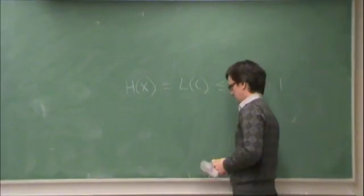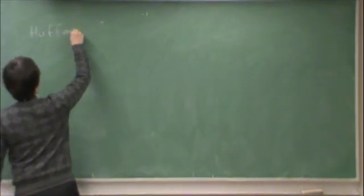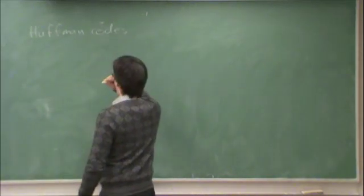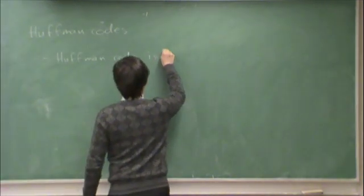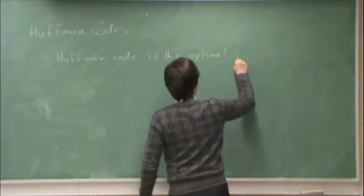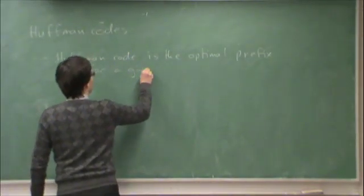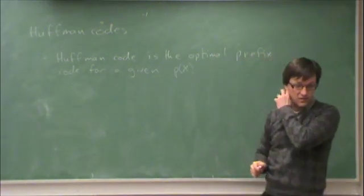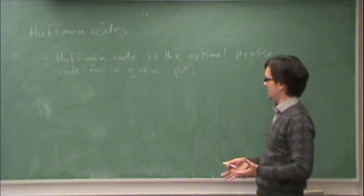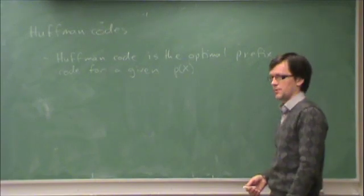Today, we are going to look at our first real coding scheme: the Huffman procedure, or Huffman codes. The Huffman code is the optimal prefix code for a given probability distribution function. If I give you a random variable X over a certain alphabet and the probabilities, you can obtain a Huffman code using a procedure that I'm about to give you, and that is the optimal prefix code.